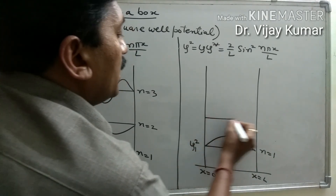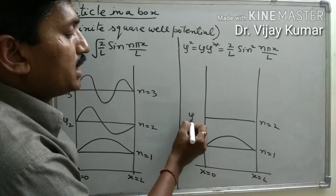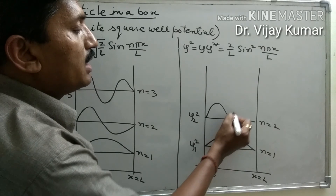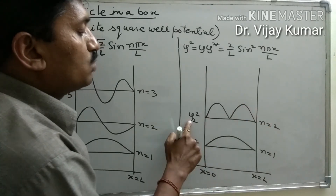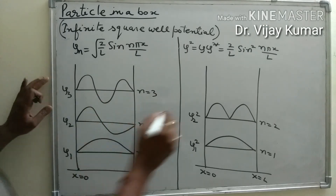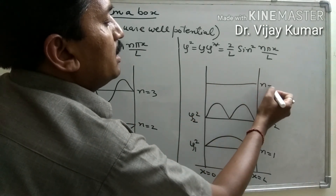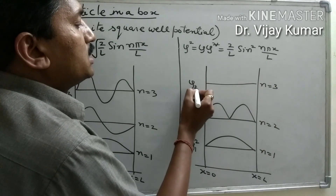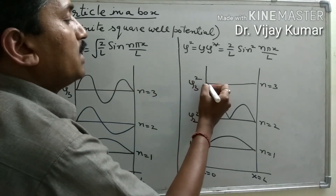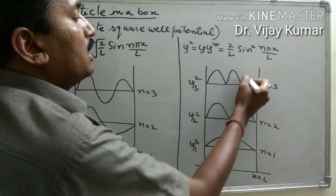At second order, n = 2, ψ₂² is represented like this — because ψ₂² is always positive, the negative part becomes positive. At third level, n = 3, ψ₃² again has the negative part become positive, and we can represent it like this.